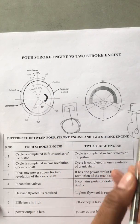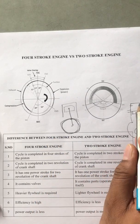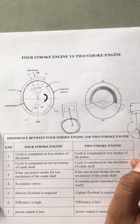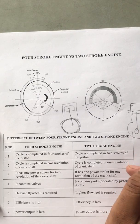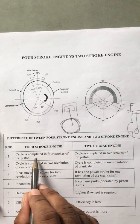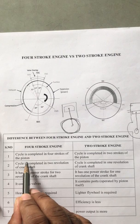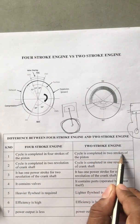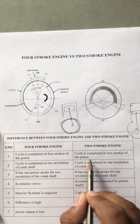All 4 processes — suction, compression, expansion, and exhaust — are completed in 2 strokes. In the 4-stroke engine, the cycle is completed in 4 strokes of the piston, while in the 2-stroke engine, the cycle is completed in 2 strokes of the piston.